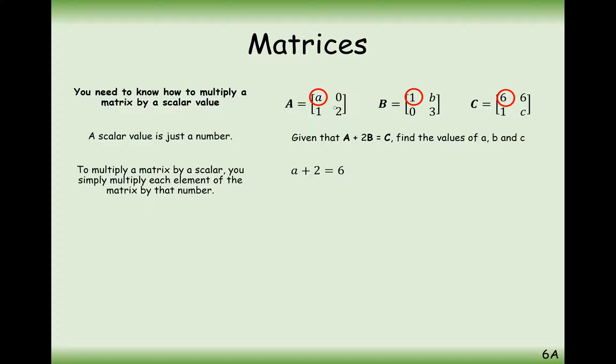So looking at the top left-hand cells, we've got to do the A matrix plus 2 times the B matrix to give us the value of the C matrix. So it's A plus 2 lots of B, or 2 lots of 1, equals C, which is 6, on the top left-hand value. So A must therefore be 4.